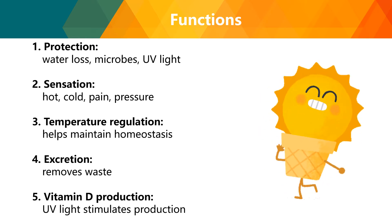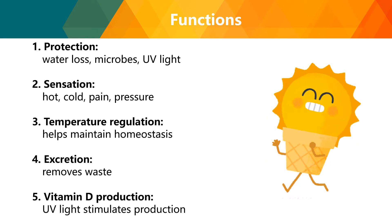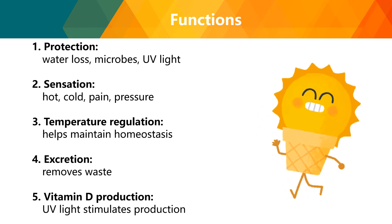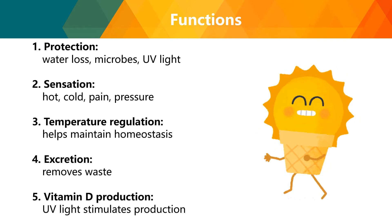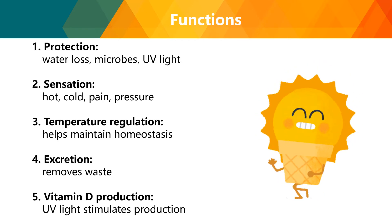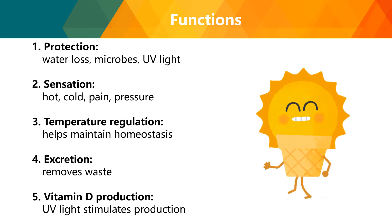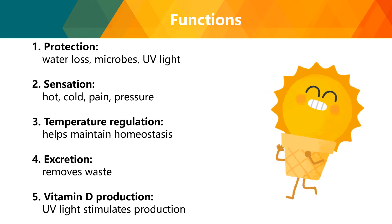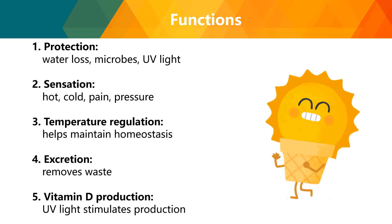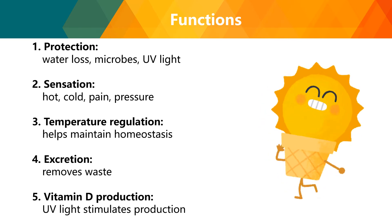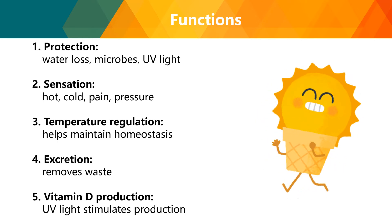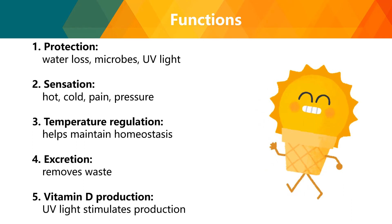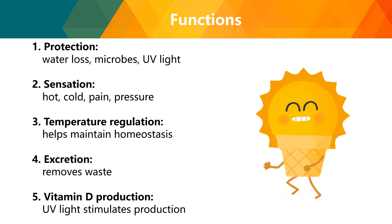Next, temperature regulation. The amount of blood flow beneath the skin surface and the activity of sweat glands both help regulate body temperature and maintain homeostasis. Next is secretion — small amounts of waste products are lost through the skin and gland secretions, which is important for removing waste from your body. Lastly, vitamin D production: when exposed to ultraviolet light, the skin produces a molecule that can be transformed into vitamin D.